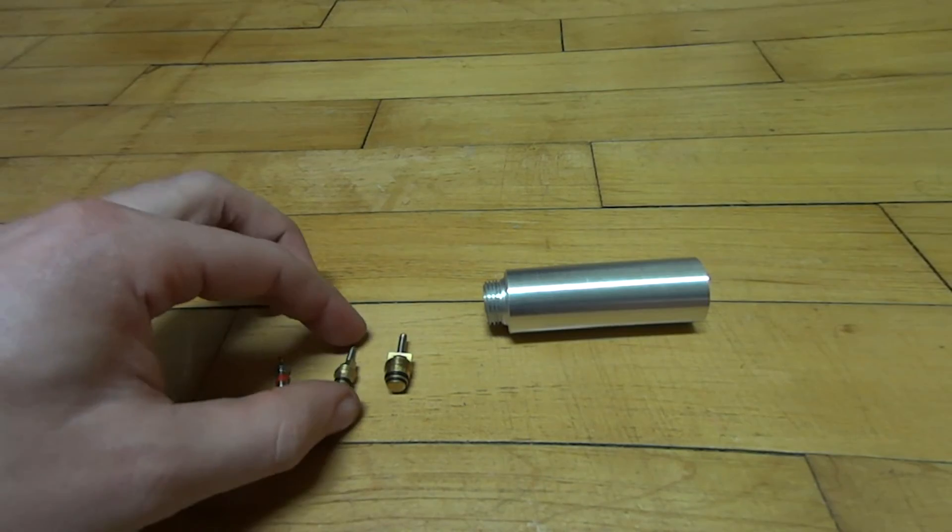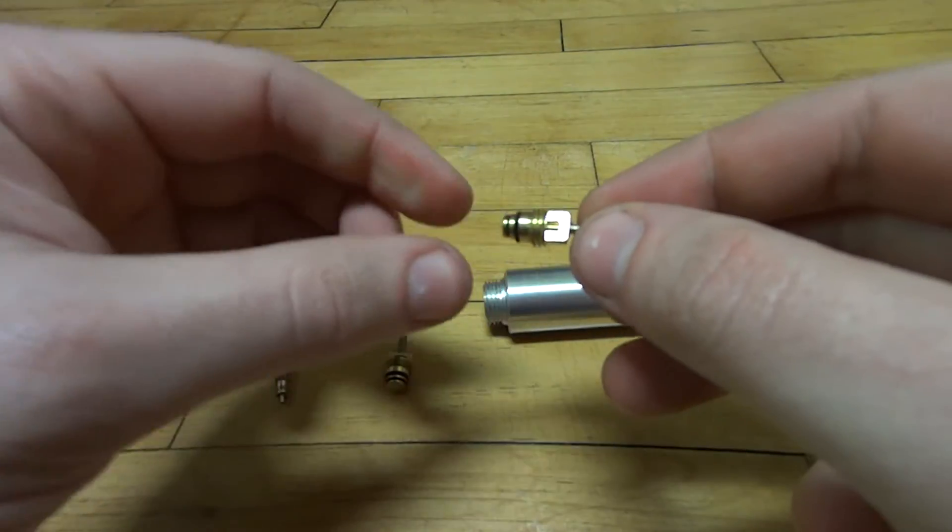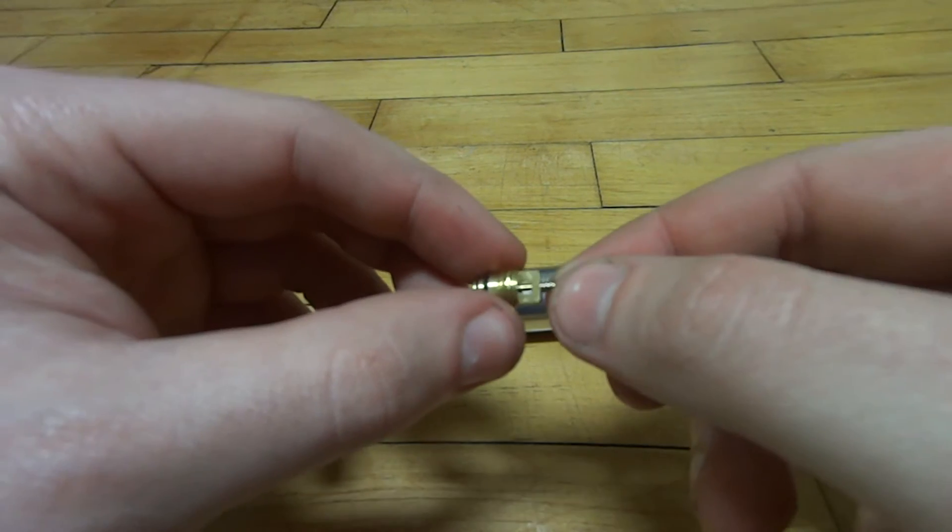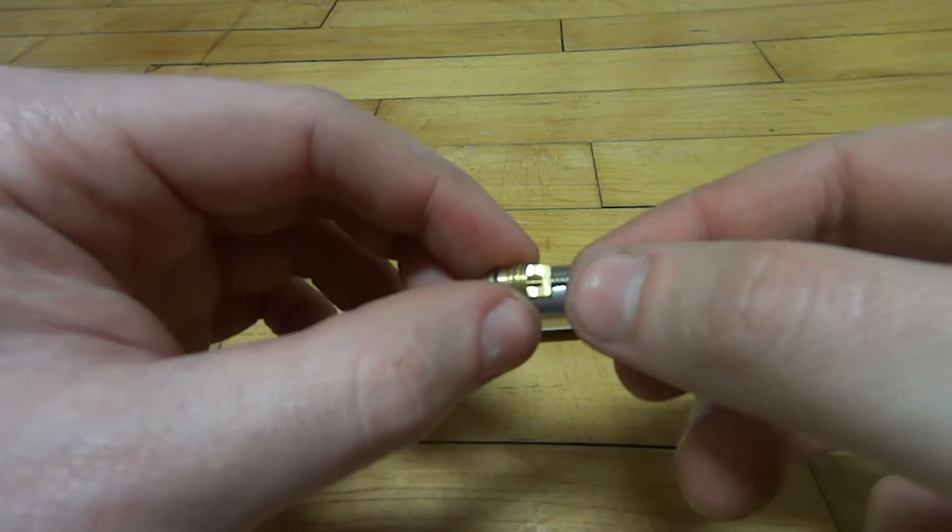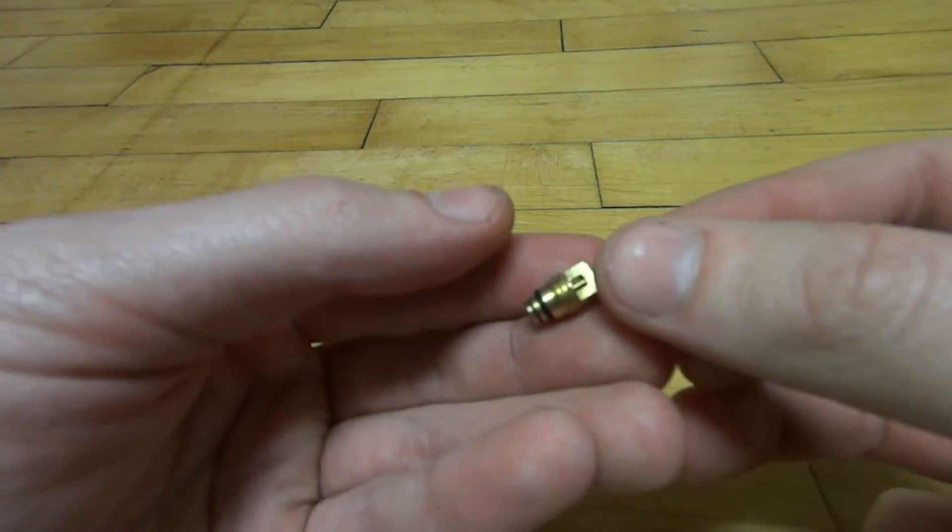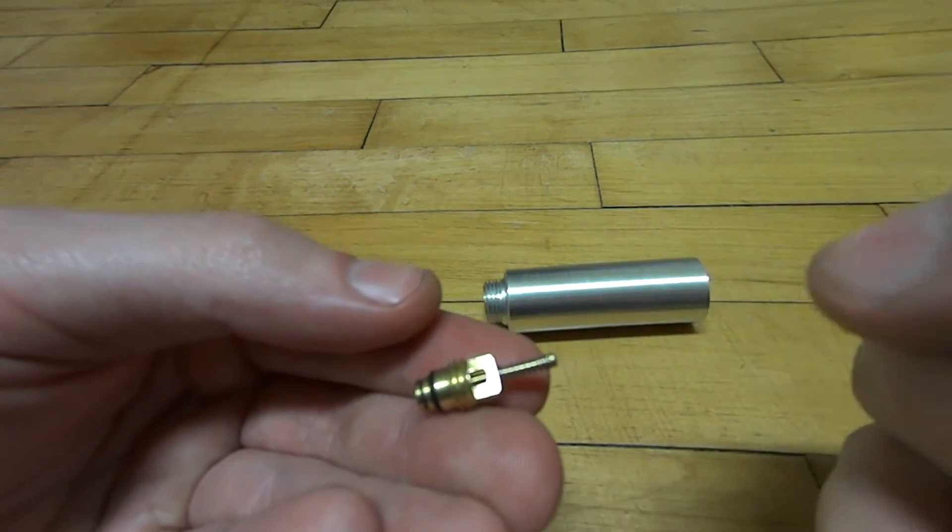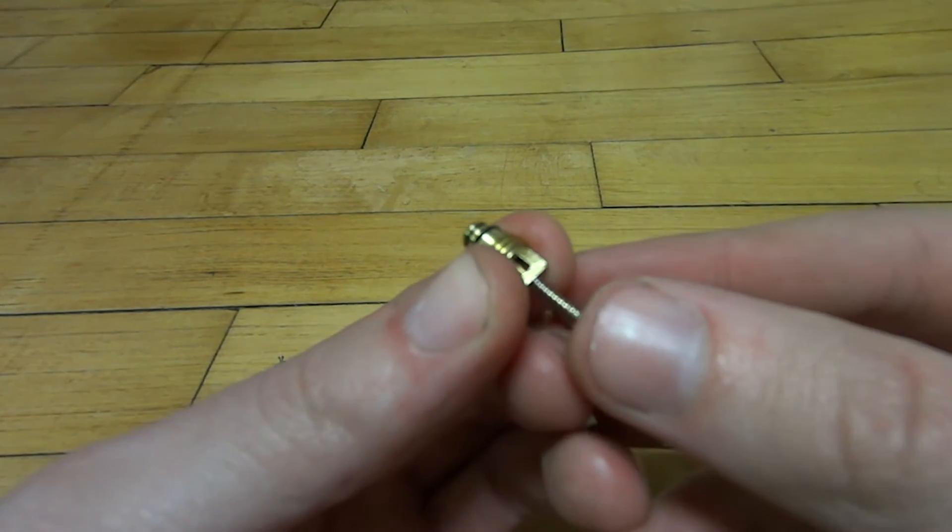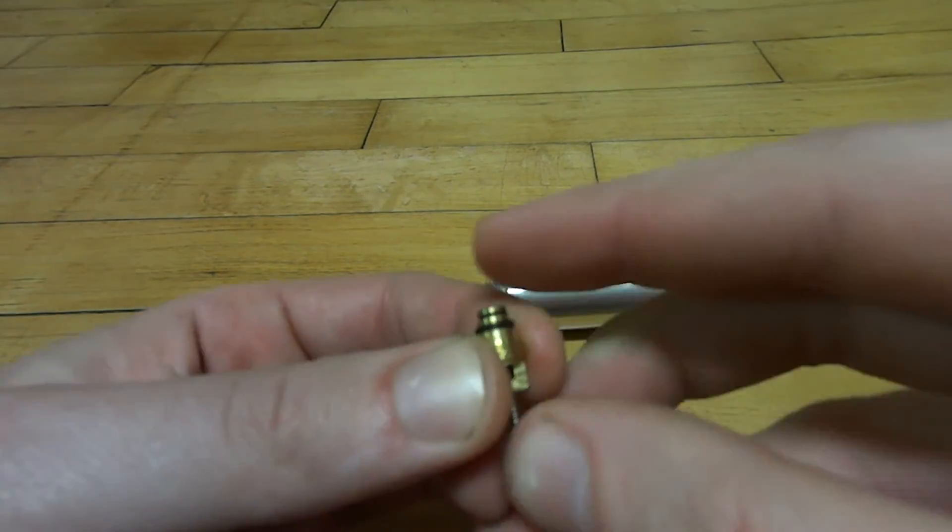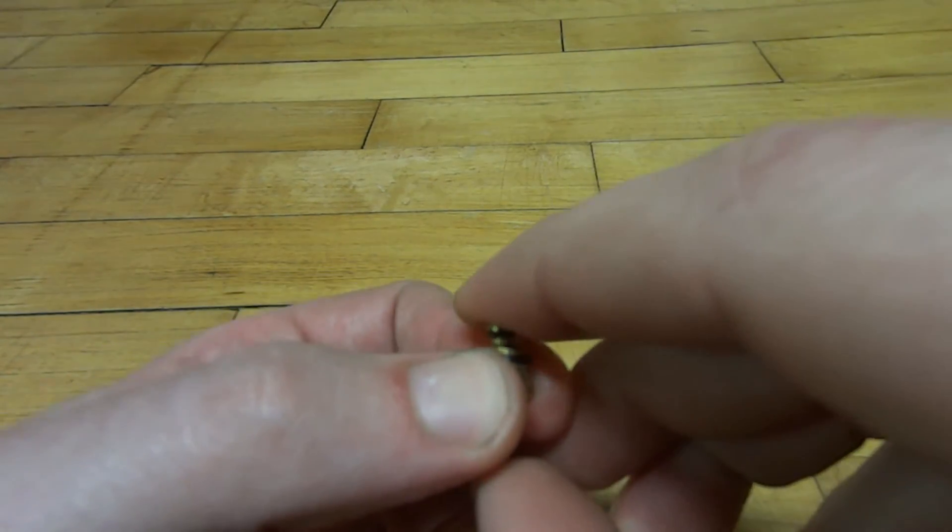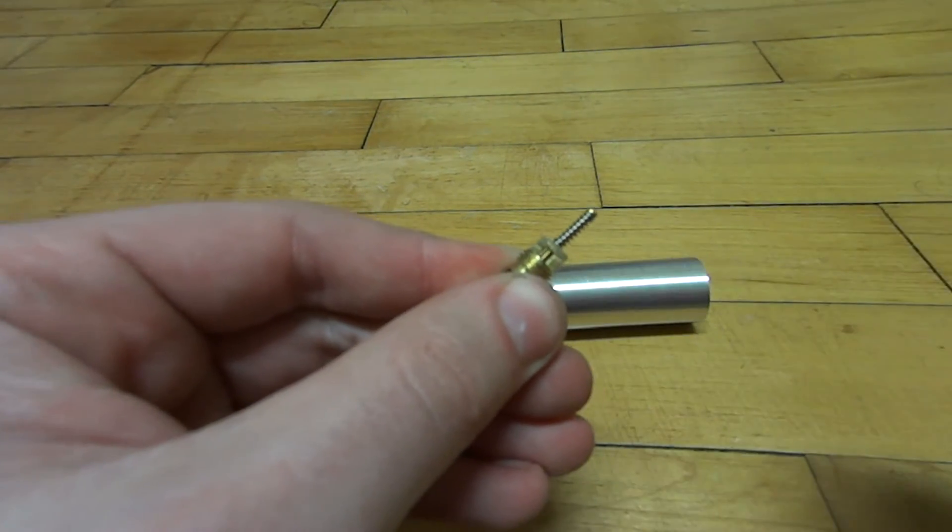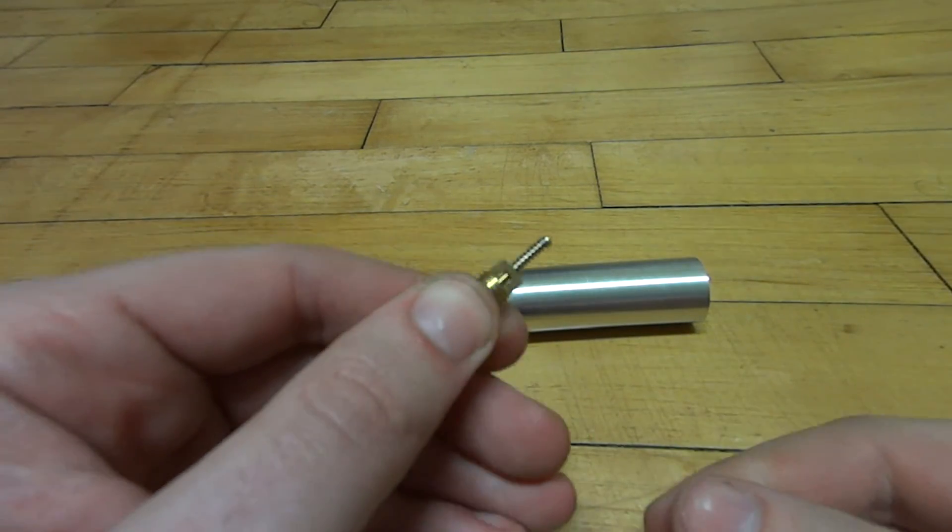This one is an 8mm, it's actually the thread pitch is 8x1, high flow valve core and it's substantially bigger. This one has an external spring on it but it works exactly the same. When this gets pushed in, the bottom of it opens up and it opens up a pretty massive hole and then the air comes out the top once again, just like in the smaller version.